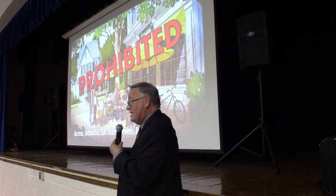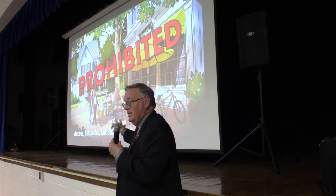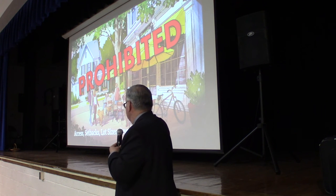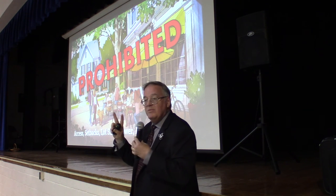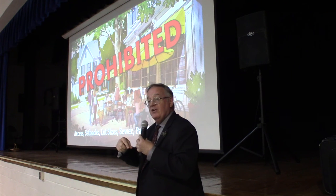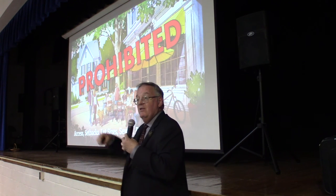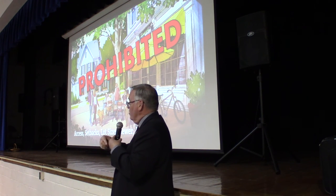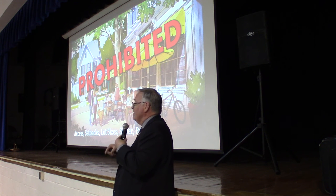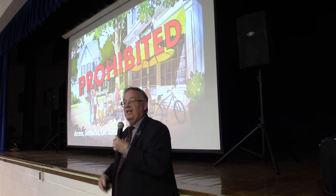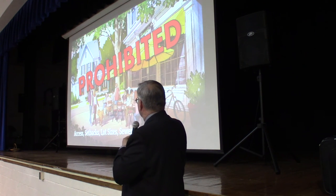To answer the question of why, if that's what we're trying to build, we can't use the UDO as it is: if you like this picture, we can't build that under the UDO as it is. Just one or two requirements alone — like the requirement that the primary thoroughfare accessing the commercial part of a mixed-use development cannot go through a residential area — makes what you see in that picture illegal. There are also the setbacks, the lot sizes, the sewer requirement, and many other things.